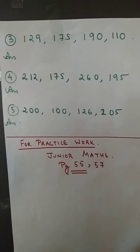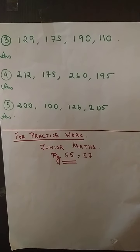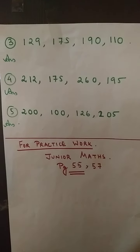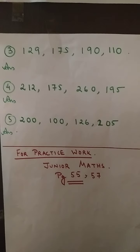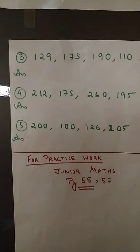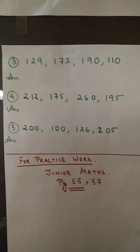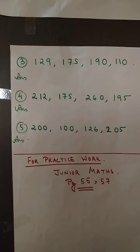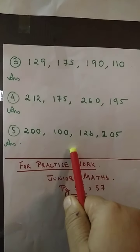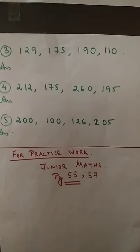Number 3 is: 129, 175, 190, and 110 — all the 100s place numbers are the same, so compare the tens. Number 4 is: 212, 175, 260, and 195 — once again a mixture, so the 200s numbers will come first since we are arranging in descending form. Number 5 is: 200, 100, 126, and 205. I will give the answers of this exercise in the group — check the answers from there. For practice work, take out your Junior Maths book and do pages 55 and 57.